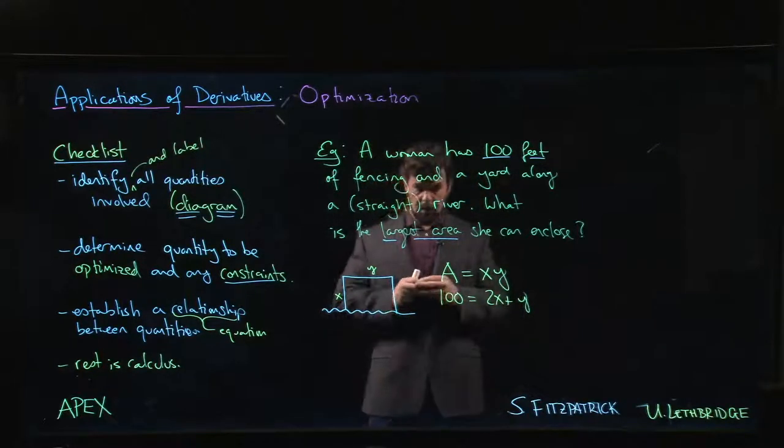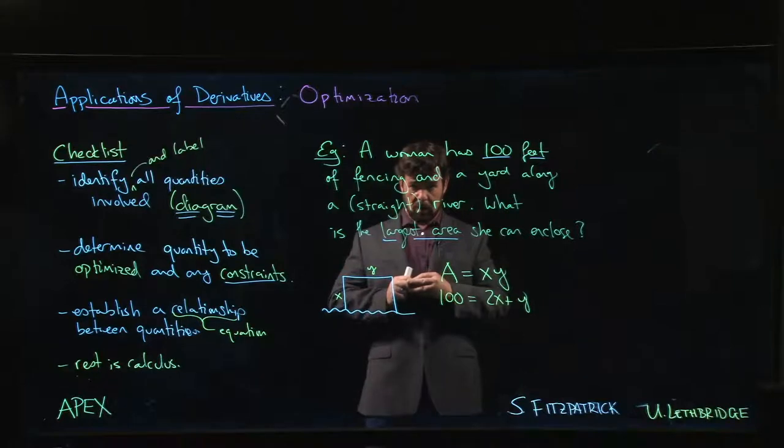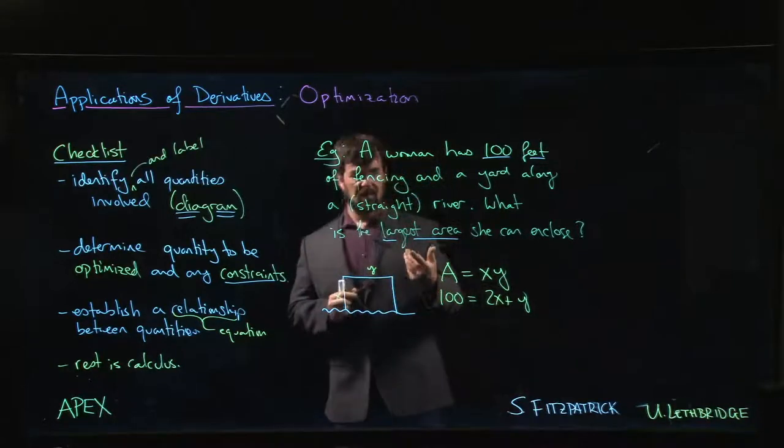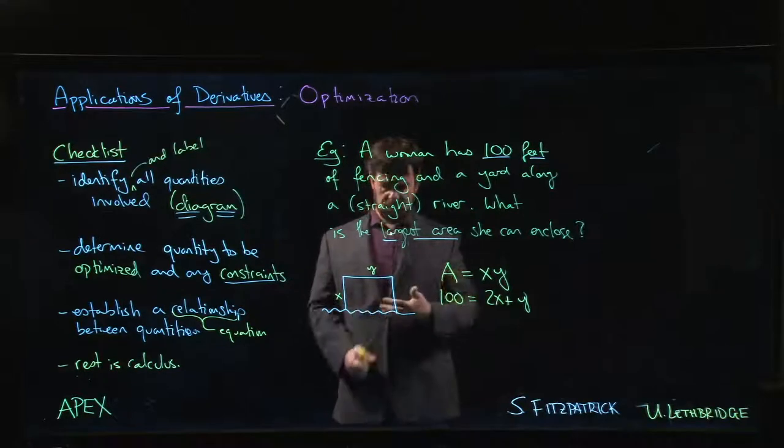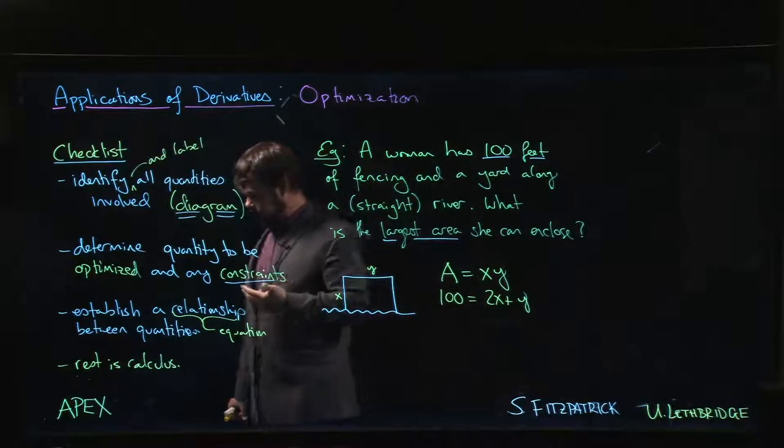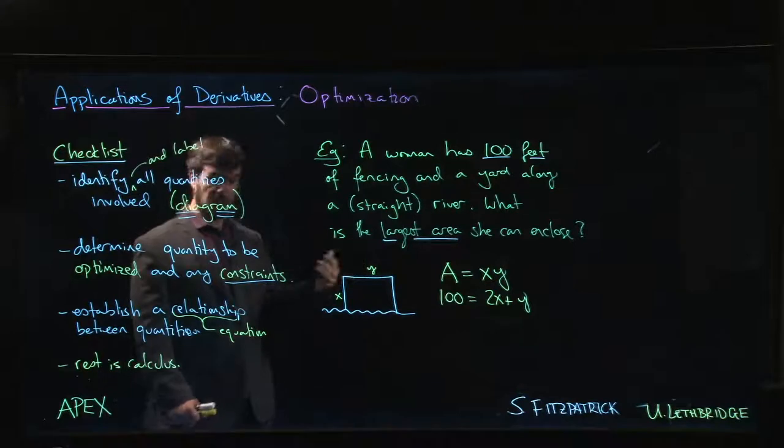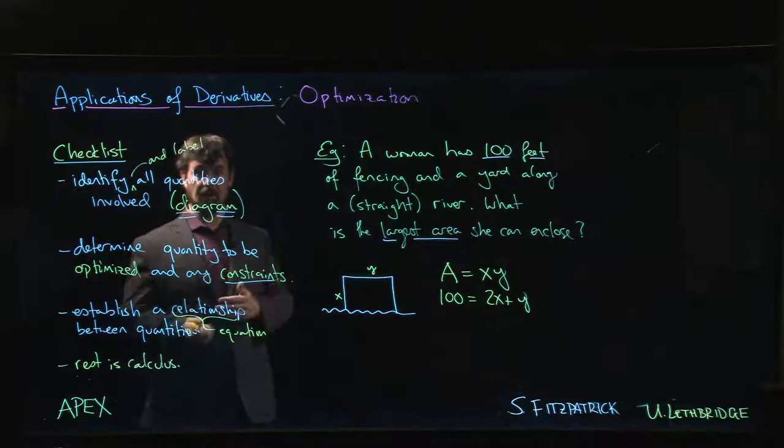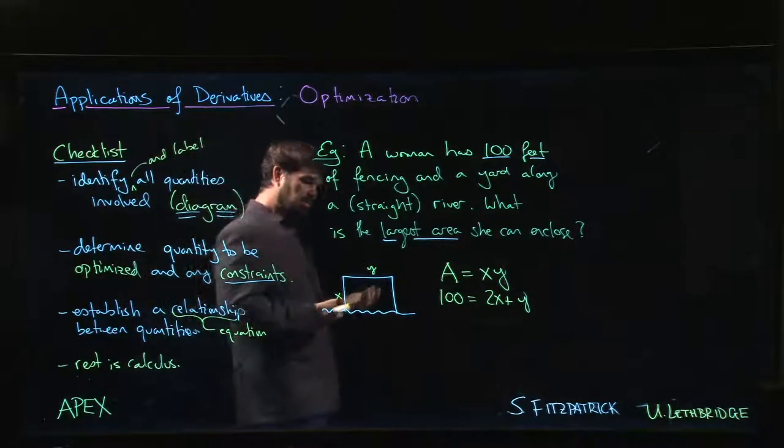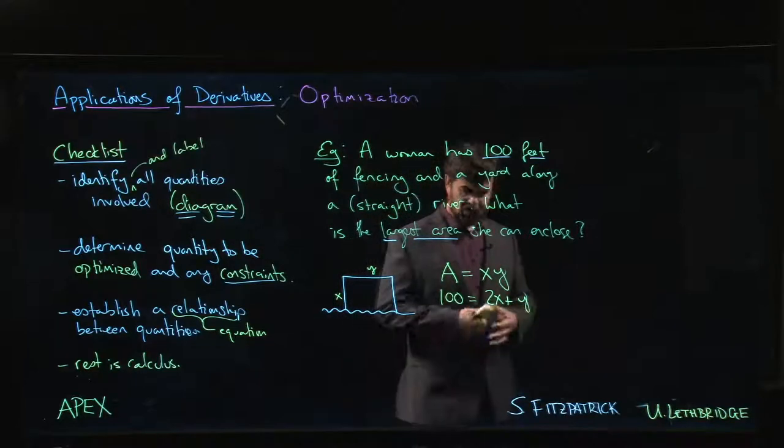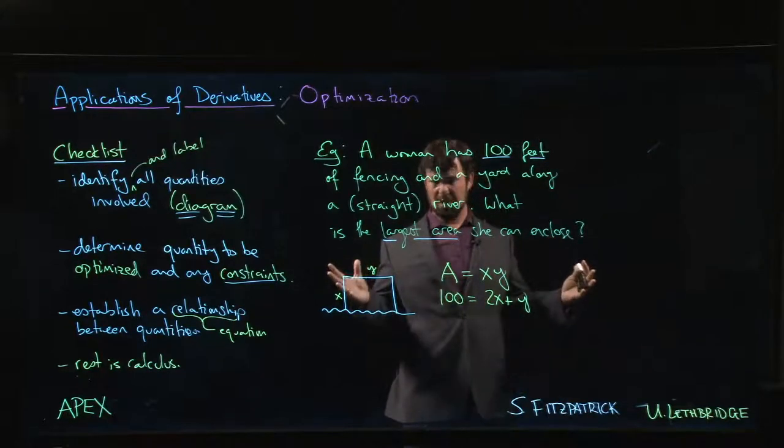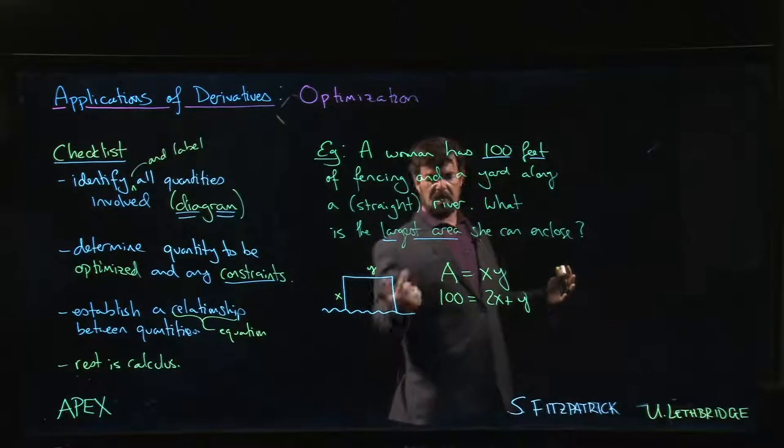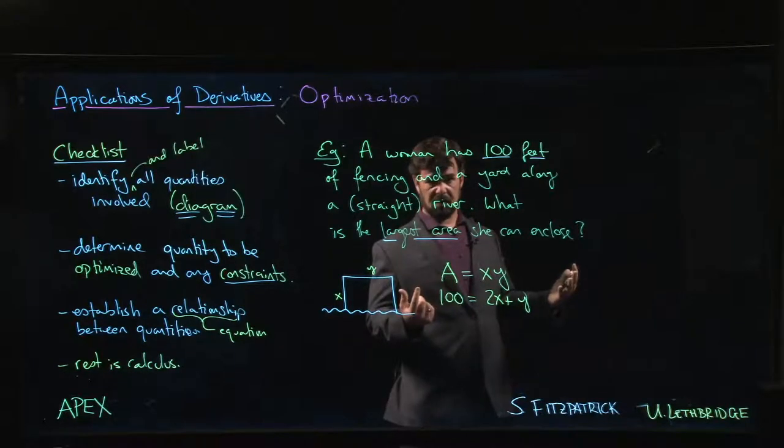One of the places where you can go wrong on these problems is mixing up the constraint with the thing that you're trying to optimize. Some people get mixed up because they just misremember formulas for things like area and perimeter. Generally in a calculus course, we probably don't expect you to remember all the exotic area and volume formulas for every possible shape, but typically area and perimeter of a rectangle is something we'll assume that you can come up with.